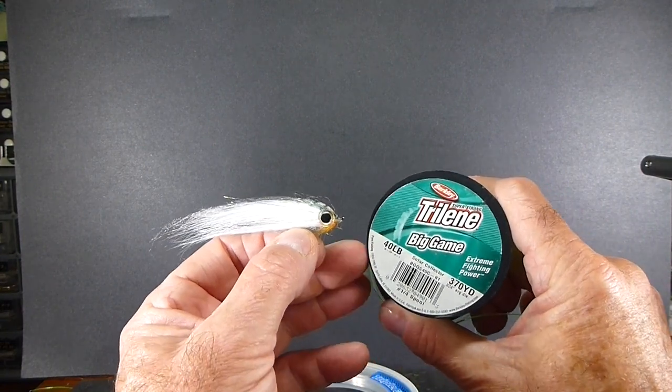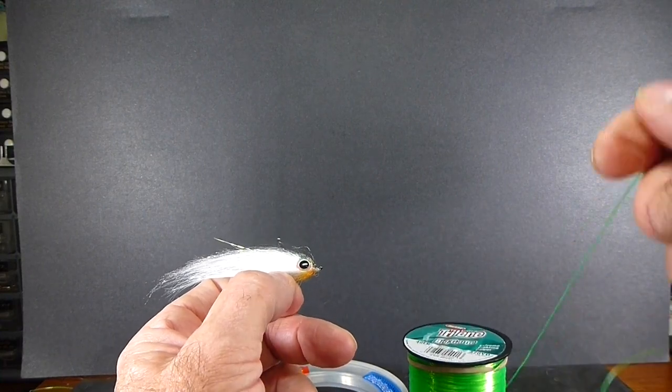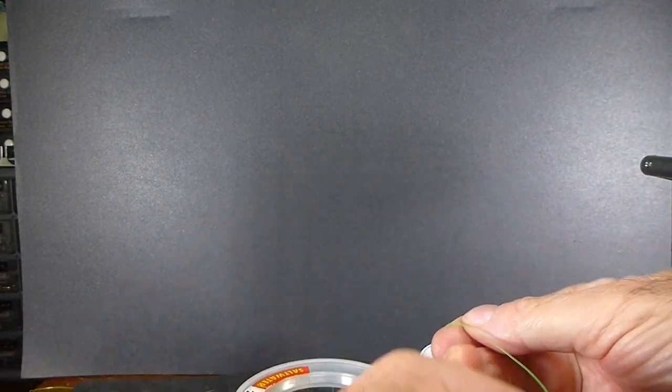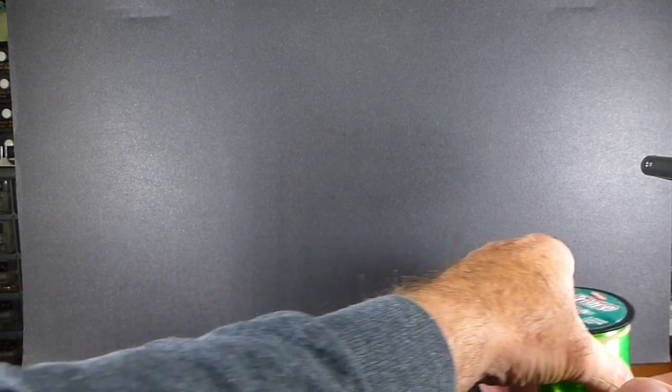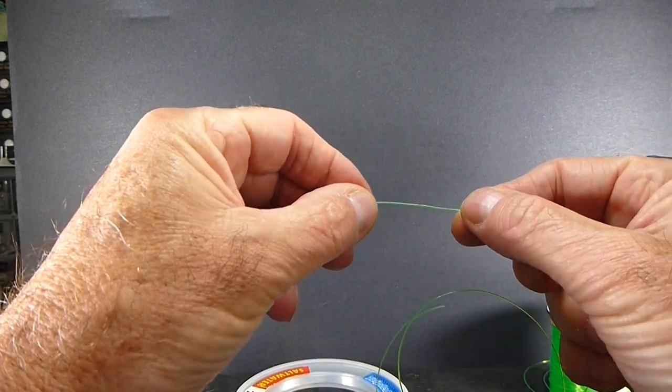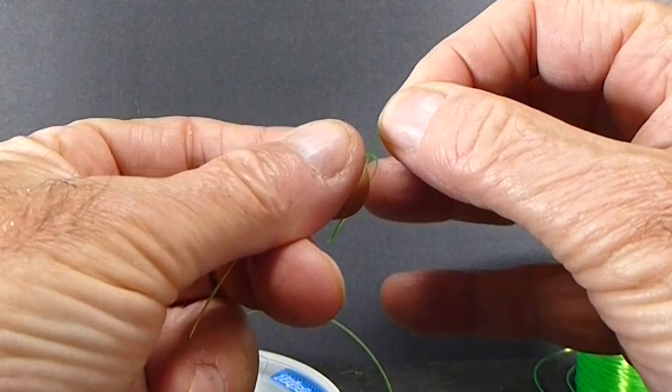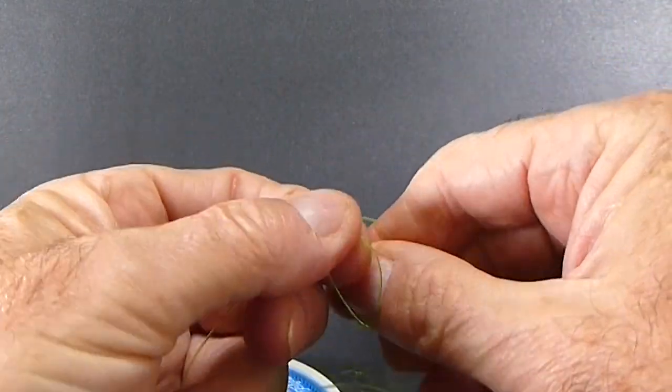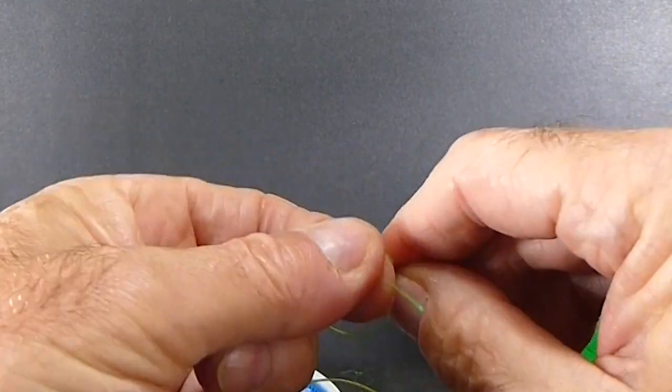And we'll start here. I'm just going to demonstrate that with some 40 pound big game, it's just in bright yellow color here, so hopefully you can see it a little better. I'll get a piece of that off here, and so what we need to do is start, we're going to take our tag end here, and take a granny knot, just a simple granny, and go through it one more time.